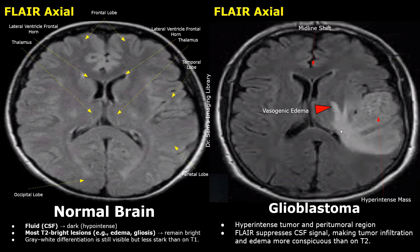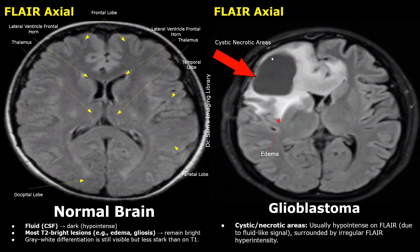This mass has a more cystic appearance than the previous cases, which is why it appears hypo-intense. It consists of more free fluid-like or CSF-like components, which led to its dark appearance on this FLAIR image. The edema appears hyper-intense and surrounds the mass. Mass effect and midline shift are present.